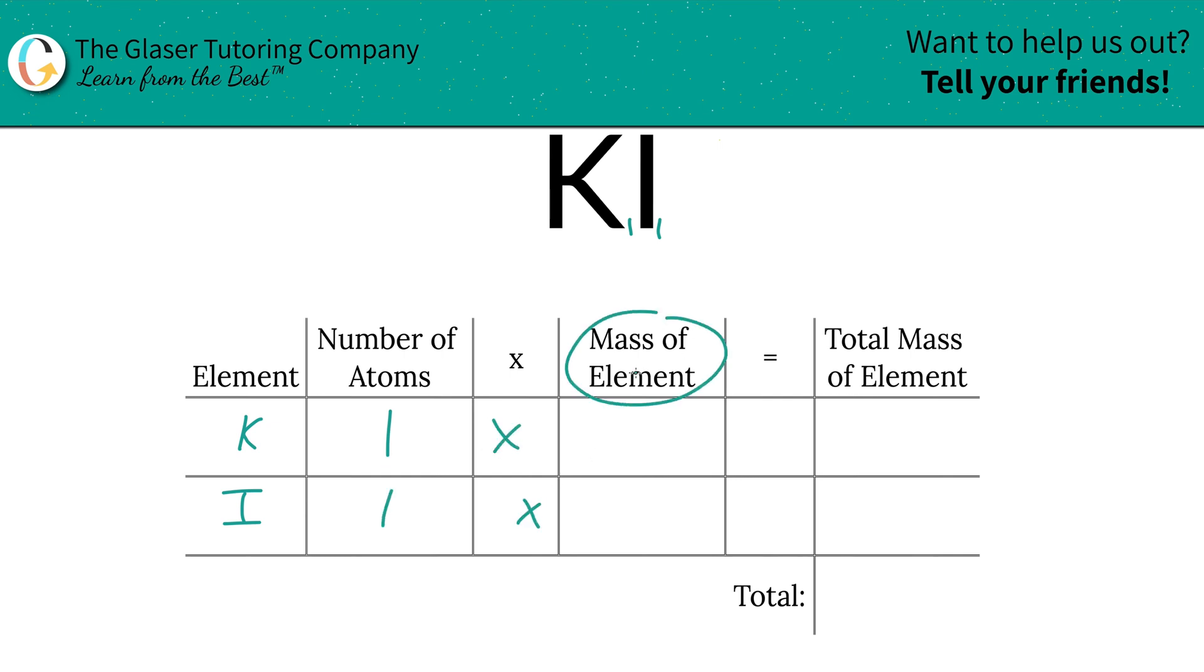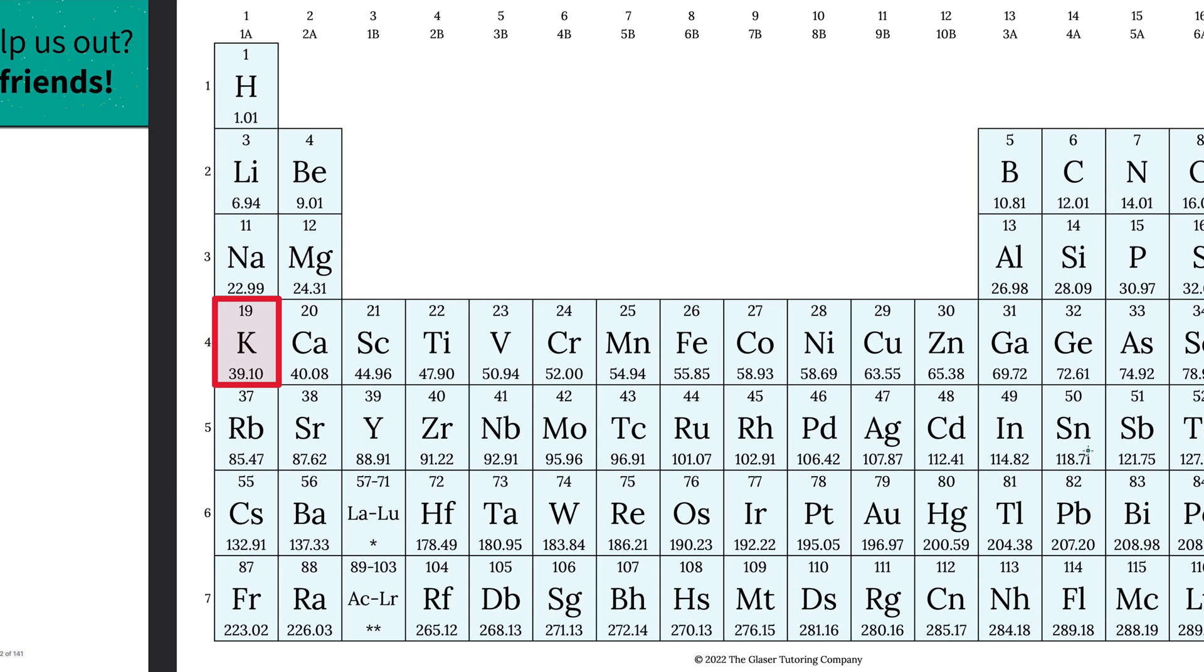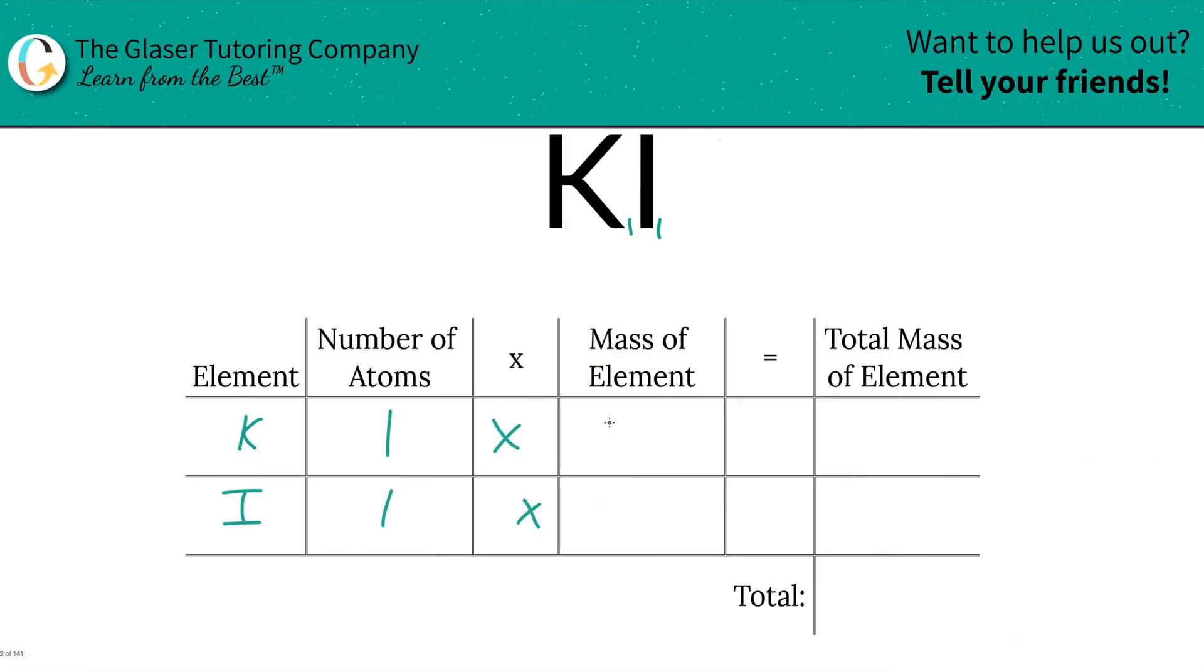Then we're going to take those number of atoms and multiply it by the mass of each element. That's where the periodic table comes in. So let's take a look. Here's the mass of potassium, 39.1. Mass of iodine is 126.9. So let's write them down. We've got 39.10, and then we have 126.90.